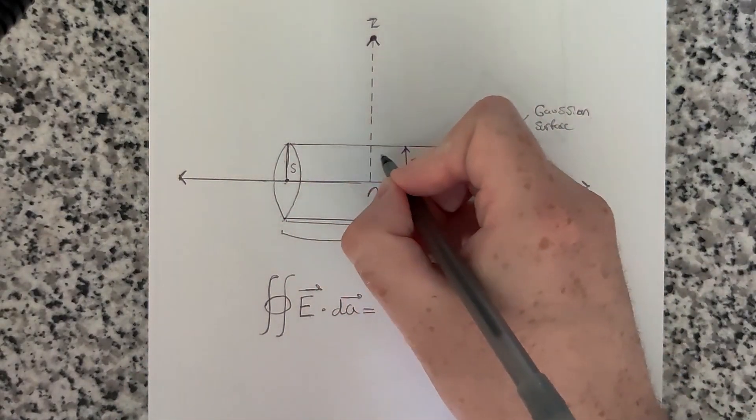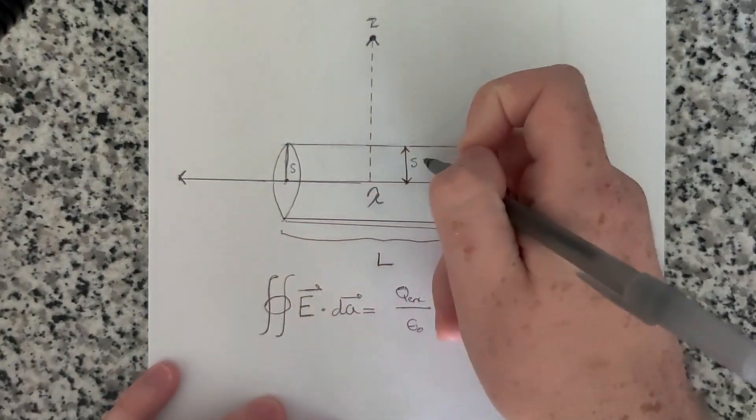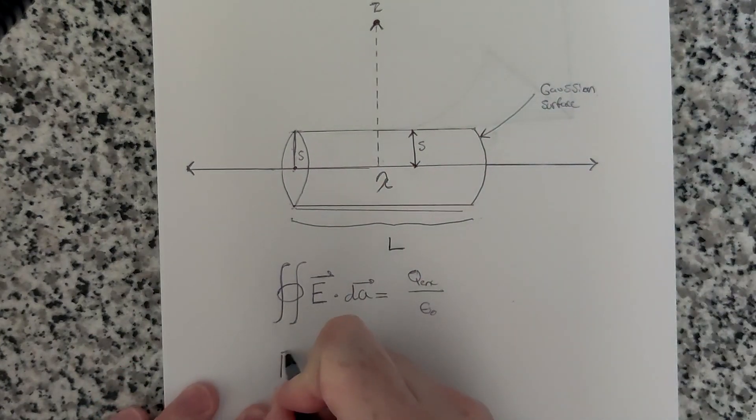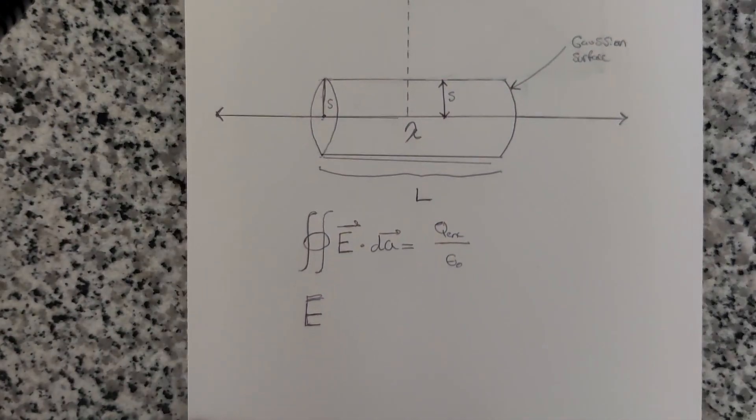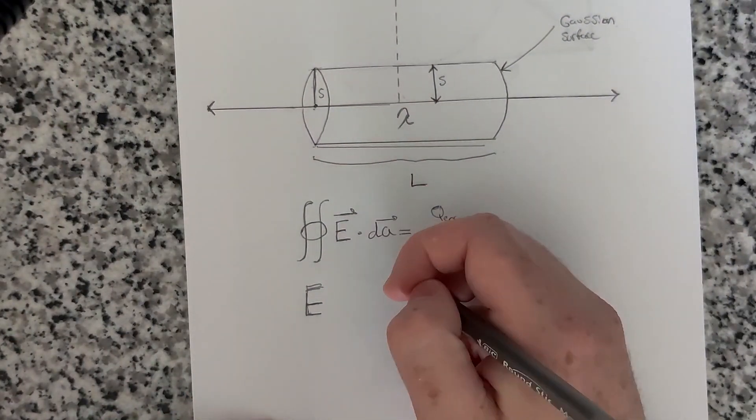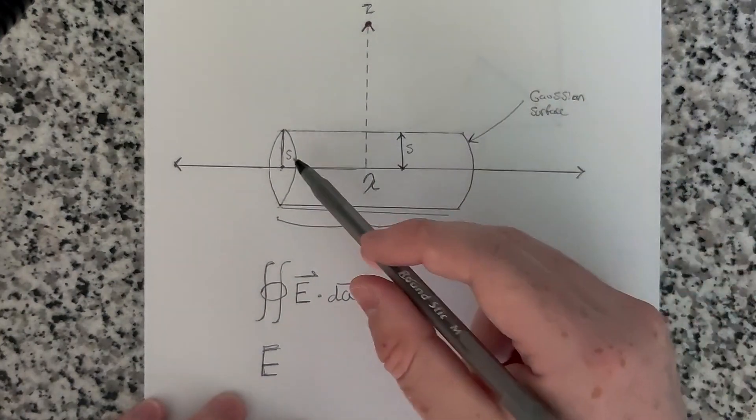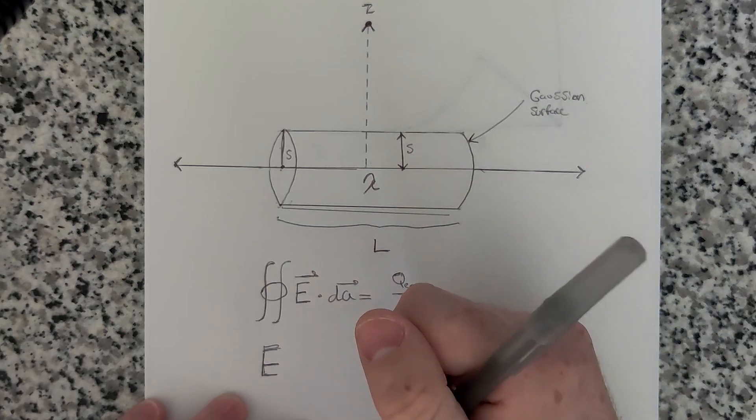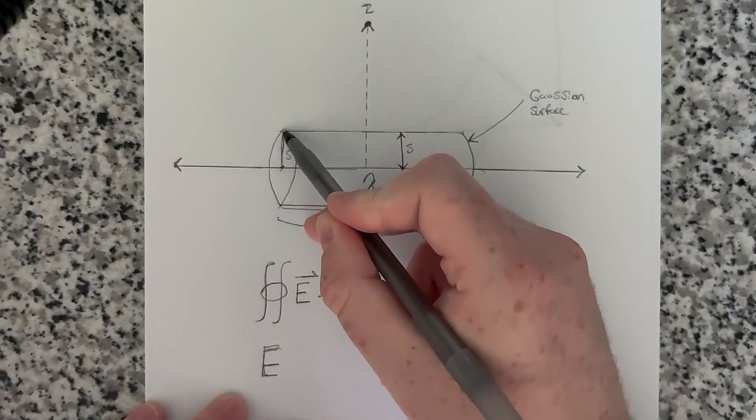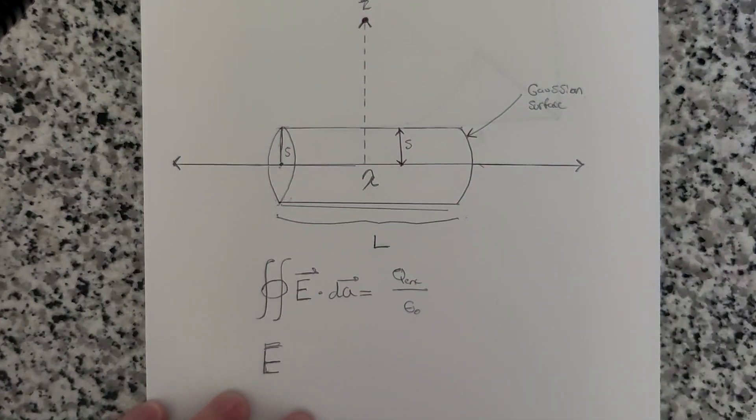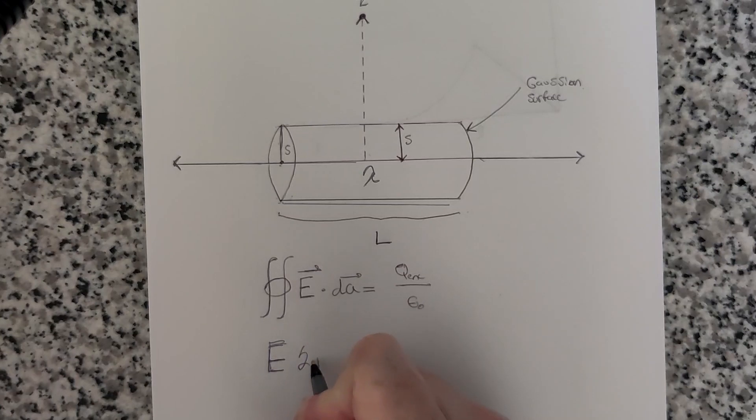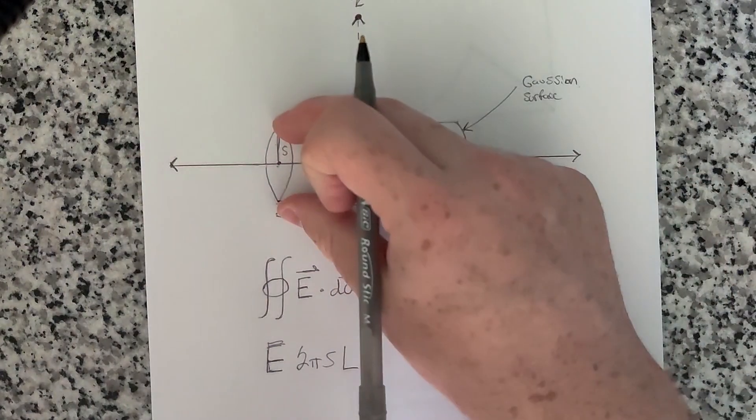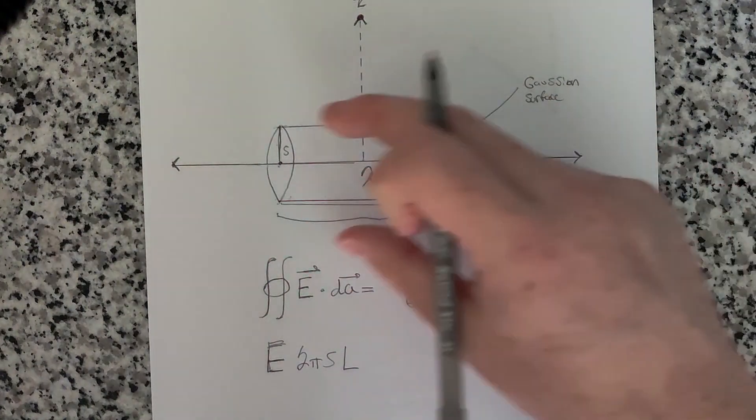And since the entire surface here is a radius s away from the wire, then the electric field along the entire cylindrical surface should be constant. And therefore, we can pull it out of our integral. So we just have the magnitude of E there. And then we integrate over the surface area of where the flux is passing through, which is just the surface area of the cylinder excluding the two end faces, which would be the circumference of one of the ends times the length of the entire cylinder. So it would be 2 pi s, which is the circumference, times the length, giving you the surface area of the soda can here, excluding the top and bottom.